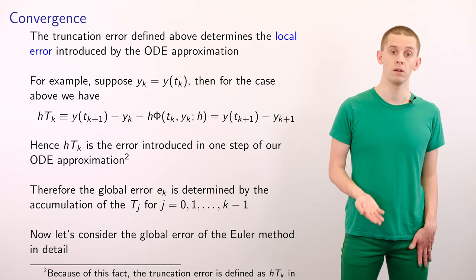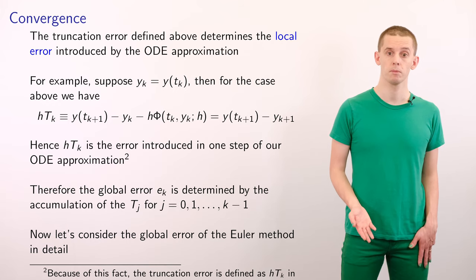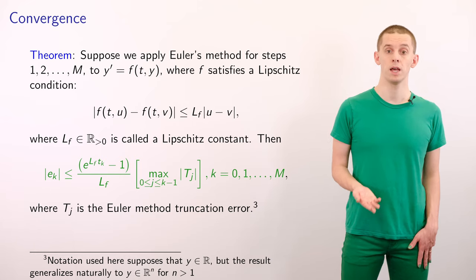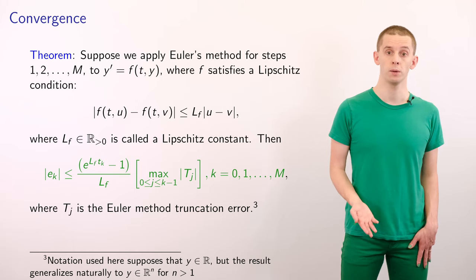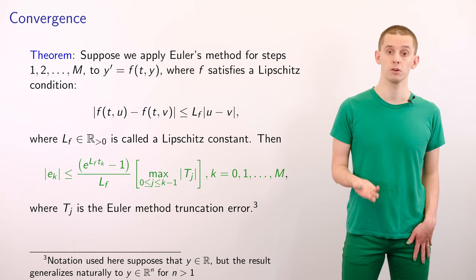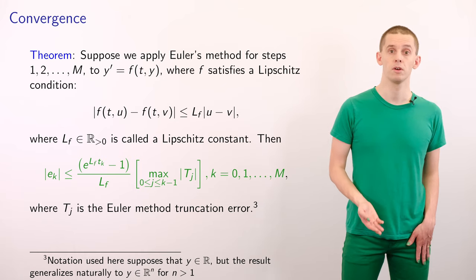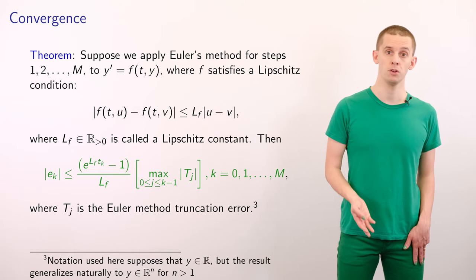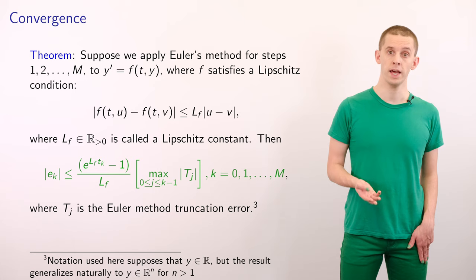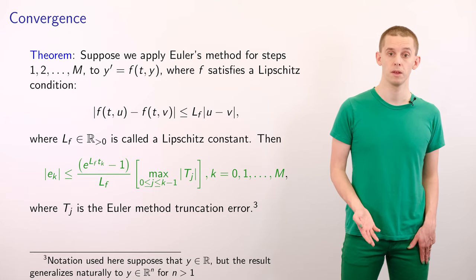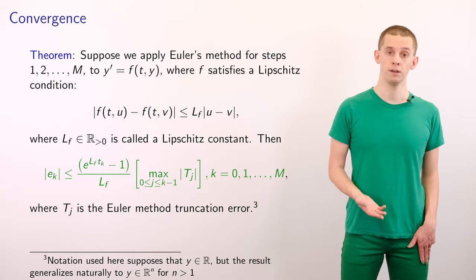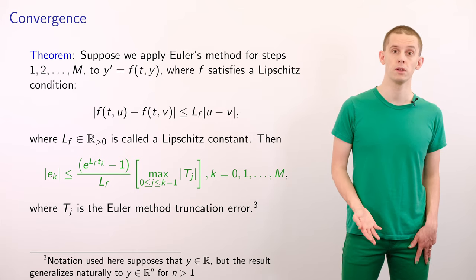Now let's consider the global error of the Euler method in more detail. We have the following theorem: suppose that we apply Euler's method for steps 1, 2 up to capital M to the equation y′ = f(t, y). We'll also demand that f satisfies a Lipschitz condition.